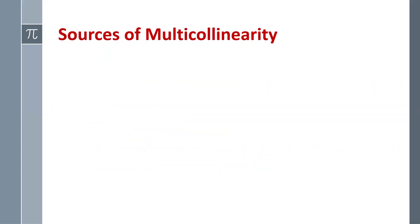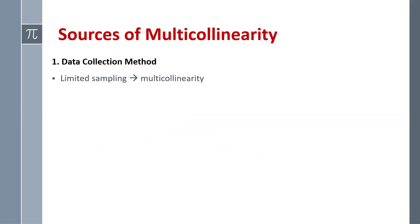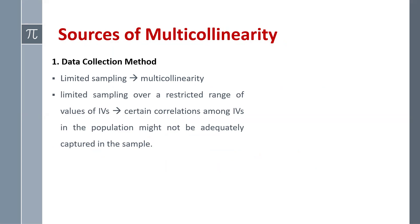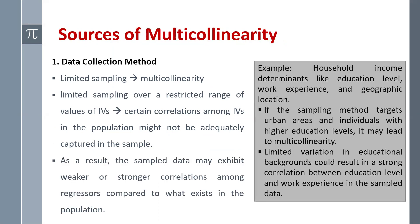Now, what are the sources of multi-collinearity? The first source is the data collection method. Suppose we have limited sampling over a restricted range of values of independent variables. For example, when studying household income determinants — education level, work experience, and geographic location — if the sampling method targets only urban areas and individuals with higher education levels, the limited variation in educational backgrounds could result in a strong correlation between education level and work experience in the sampled data, causing multi-collinearity.